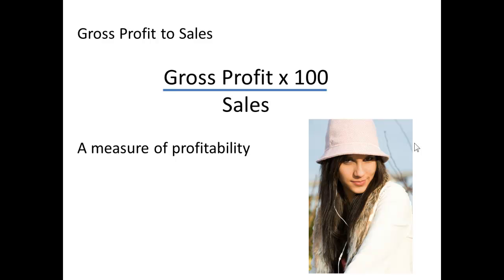The first of these is the gross profit to sales ratio, which is simply: multiply the gross profit by 100, divide by sales, and we have a crude measure of profitability.